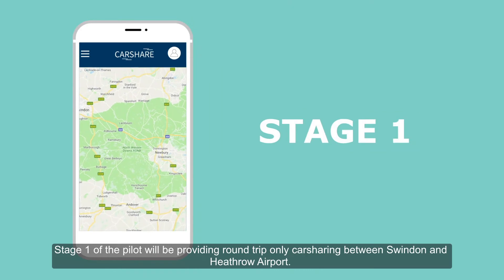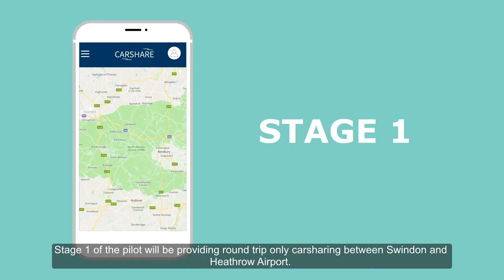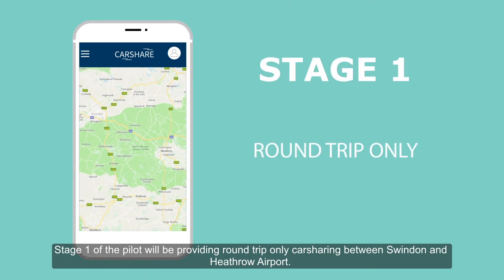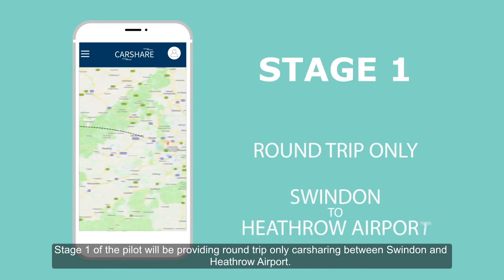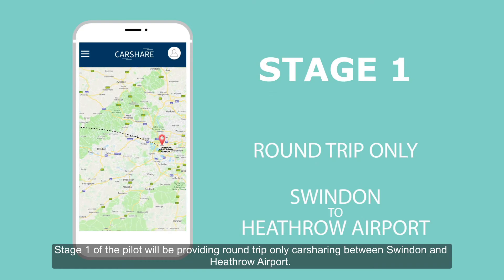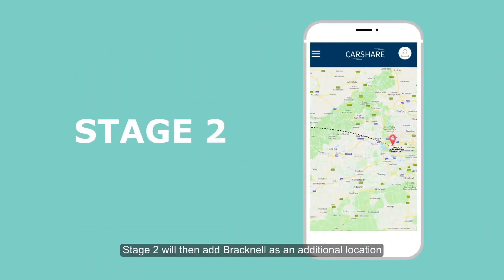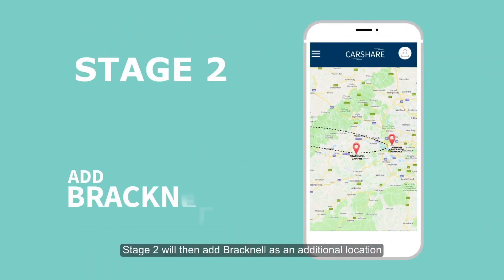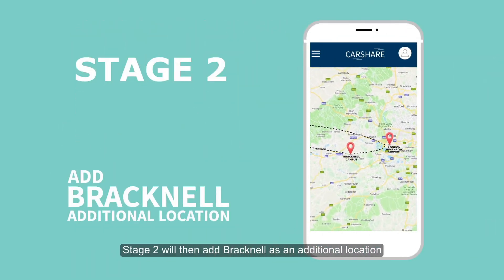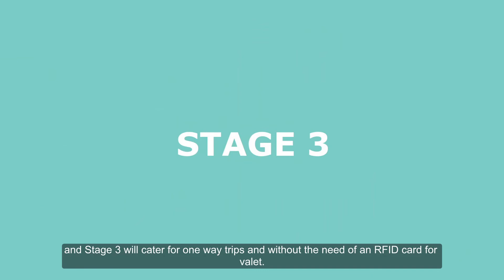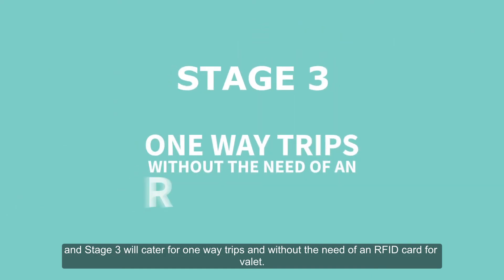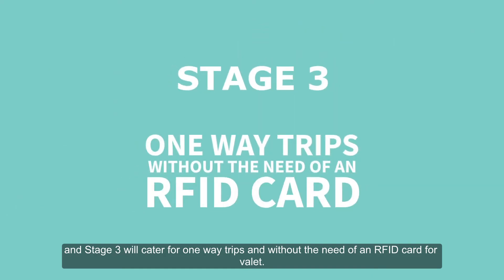Stage 1 of the pilot will be providing round-trip only car sharing between Swindon and Heathrow Airport. Stage 2 will then add Bracknell as an additional location, and Stage 3 will cater for one-way trips and without the need of an RFID card for valet.